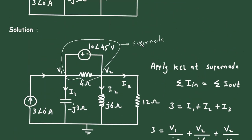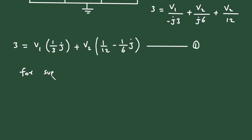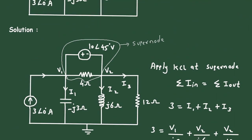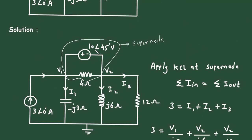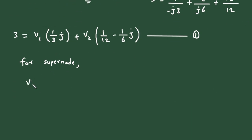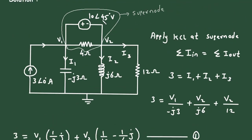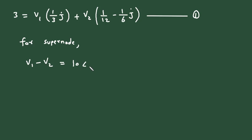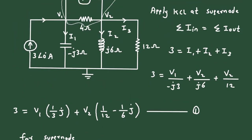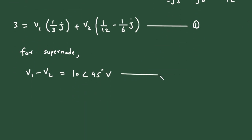Next, we will apply the supernode constraint equation. For this supernode, higher voltage minus lower voltage equals the source voltage. So V1 − V2 = 10∠45° volts, which gives us V1 = V2 + 10∠45° volts.